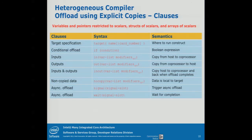I talked about a lot of clauses. The compiler tries to do the right thing, but sometimes it's not smart enough. The first thing you need to specify is where you want to put the code — in this case, target mic. We left a placeholder there to support things like reload offloading or something else. In terms of Xeon Phi, you can also specify a card number, so you always hit the same coprocessor card.